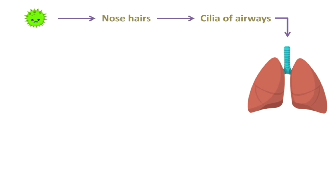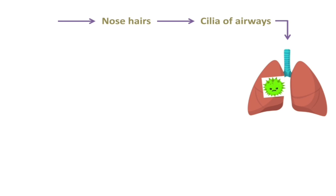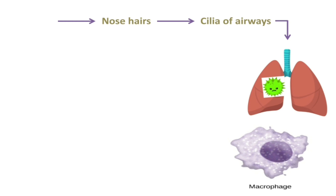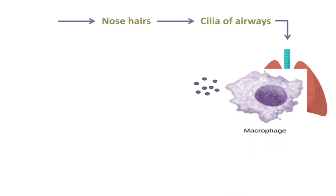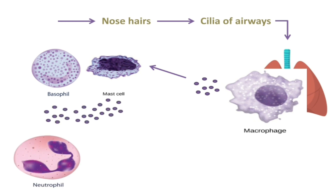Let's see the complete immune response. Imagine you breathe in a bacterium that passes the first line of defense — the nose hairs and cilia of the airways — and enters the cells of the lungs. The second line of defense attacks: macrophages, which reside in tissues, engulf the bacteria and release cytokines to amplify inflammation, attracting other immune cells such as basophils and mast cells, which secrete their cytoplasmic granules and cytokines to further amplify inflammation.